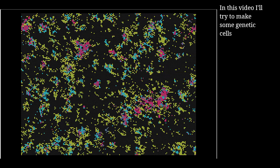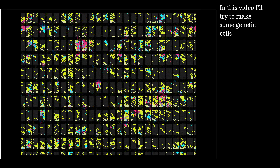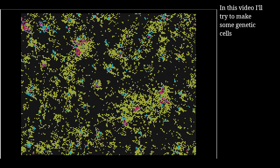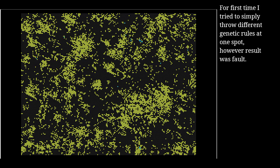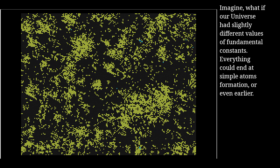In this video I'll try to make some genetic seals. The first time I tried to simply throw different genetic rules at one spot, however the result was a failure. Imagine what if our universe had slightly different values of fundamental constants? Everything could end at simple atoms formation, or even earlier.